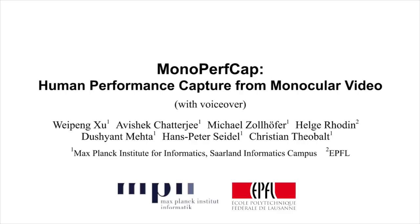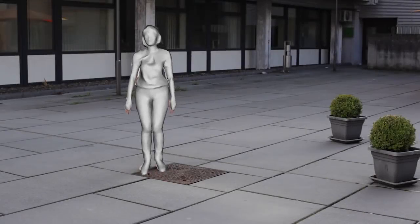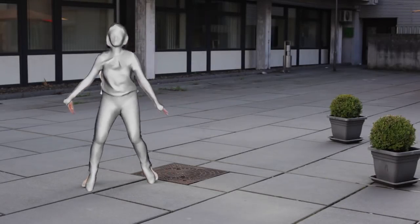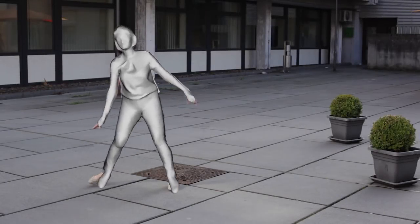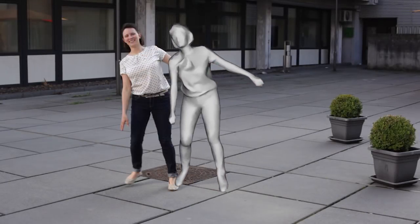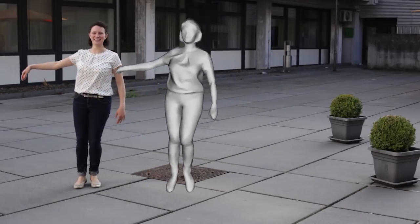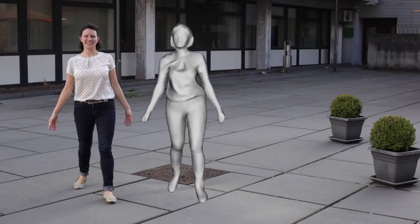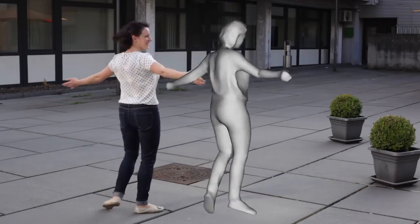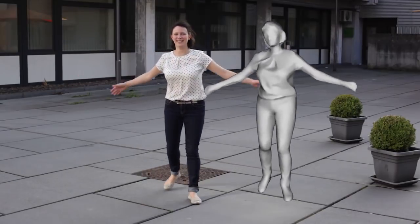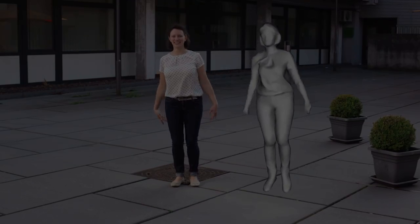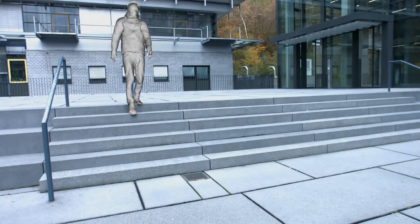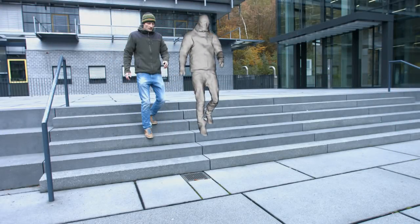We present Mono-PerfCap, a novel approach for monocular performance capture. Monocular capture is challenging due to strong occlusions and the inherent depth ambiguity. Given just a video of an actor's performance, Mono-PerfCap reconstructs the articulated motion as well as surface deformations due to skin and clothing.